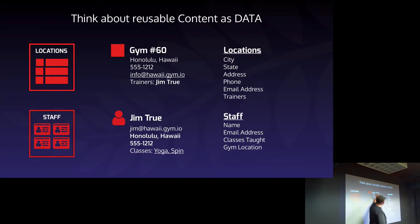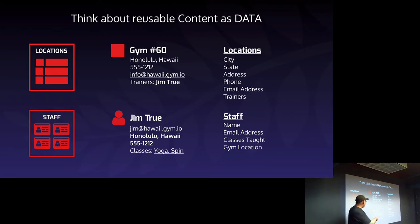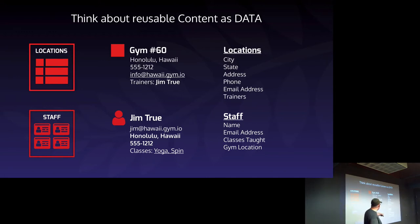For locations, I need to track the city, state, address, phone, email address, and trainers. For staff, I need to track the name, email address, classes taught, and gym location. I don't have to track the phone number on staff because it comes from the location record.